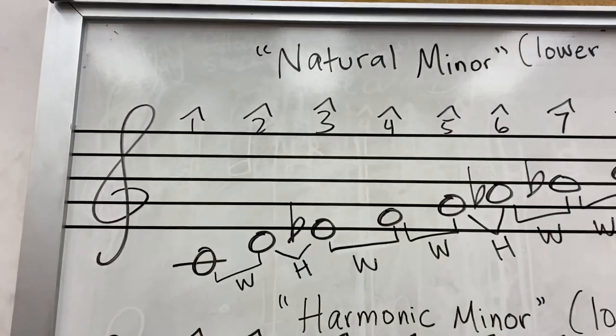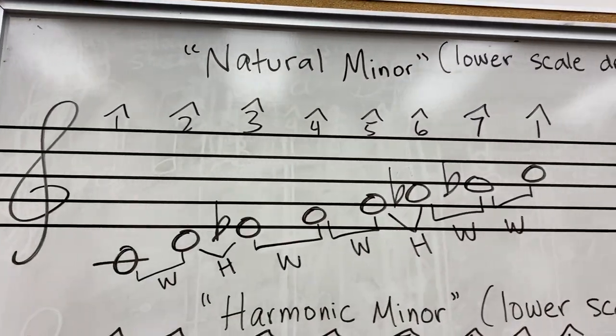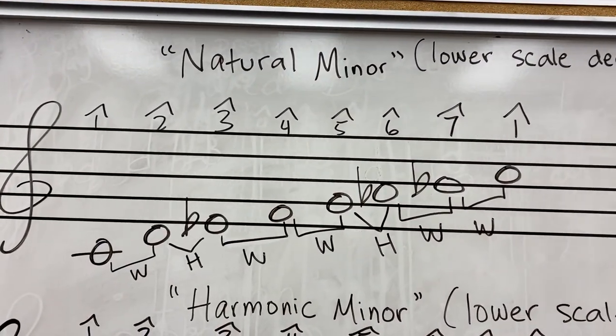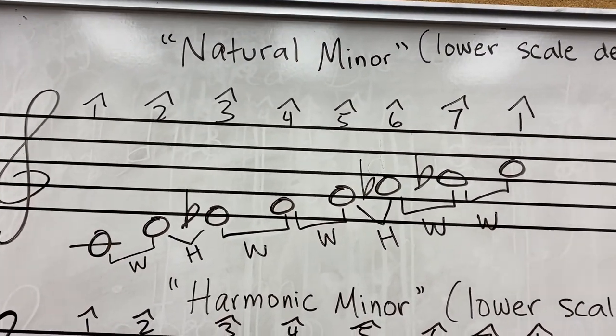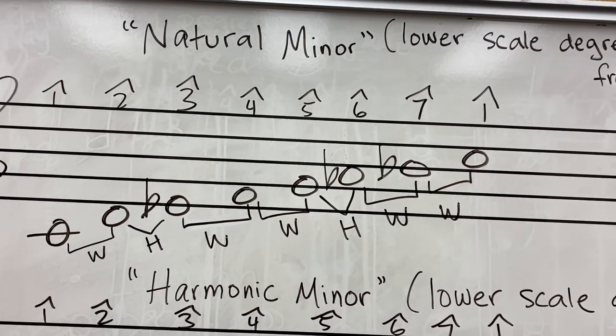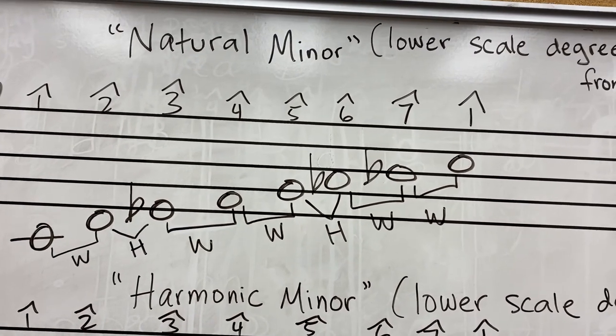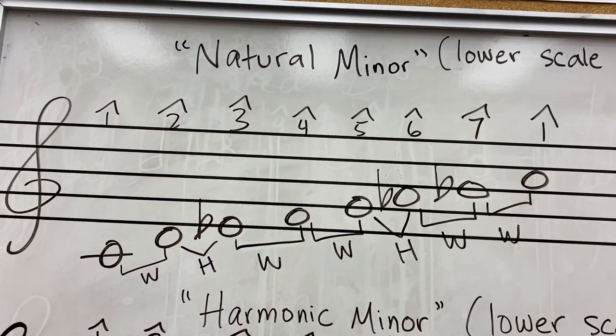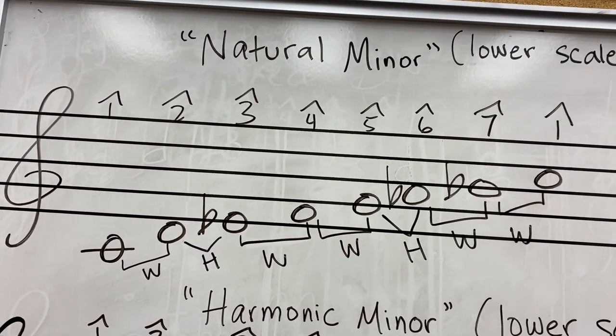So let's talk about the natural minor scale. Last week I talked about the modes, and there was one mode in particular — the Aeolian mode — which is basically natural minor.